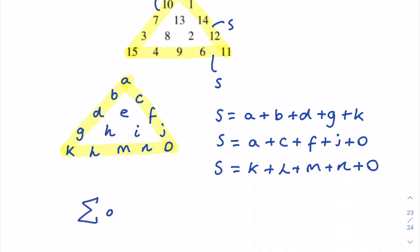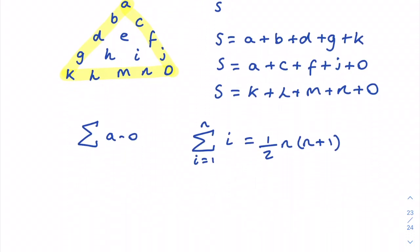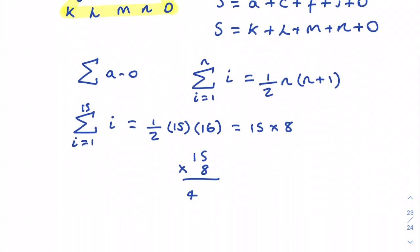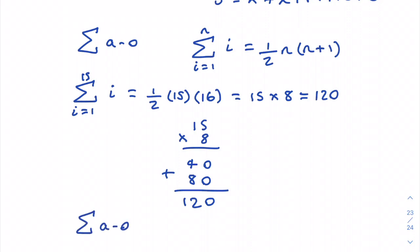Using the formula for the sum of n natural numbers — one half of n times (n+1) — with n = 15: that is half of 15 × 16. Half of 16 is 8, so 15 × 8 = 120. Therefore the sum of all numbers from a to o equals 120.